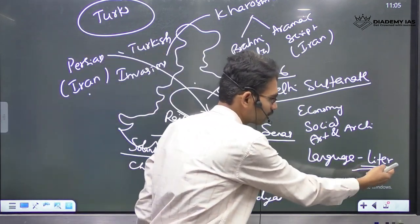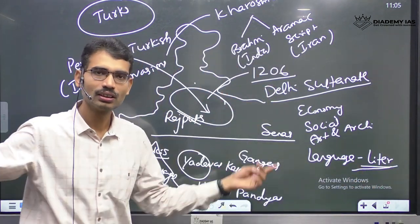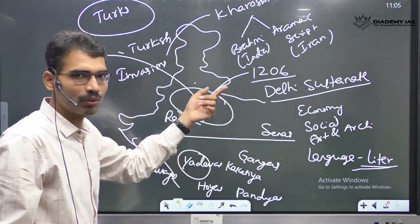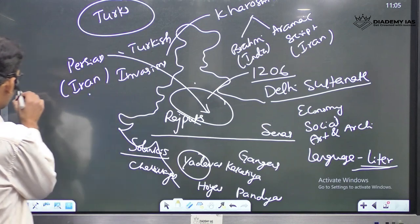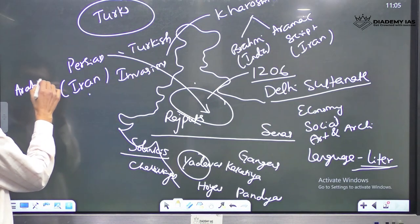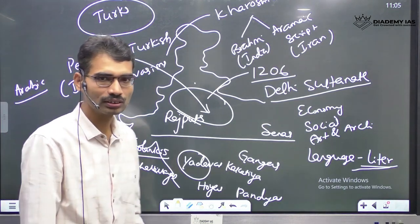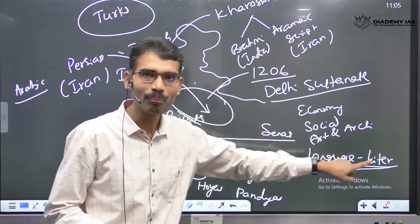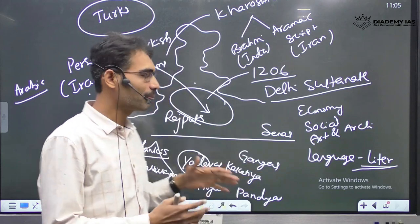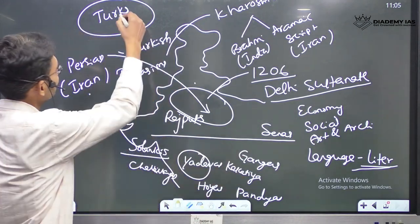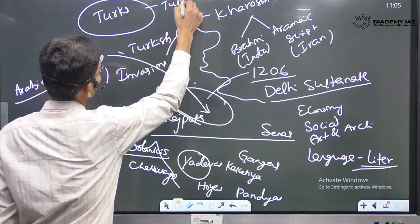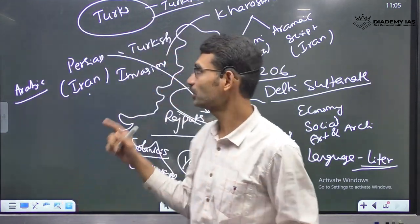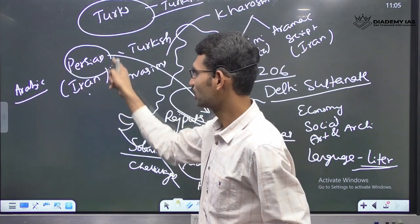Persian language became very important — many texts were written. Islam was born in Saudi Arabia, and Arabic is another important language. But major literature developed during this time period in Persian language, comparing with Arabic. Similarly, Turkish language was there, but there was not much development of Turkish literature — mainly it was Persian literature.